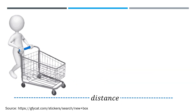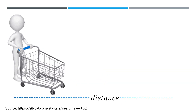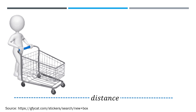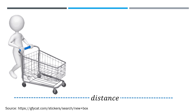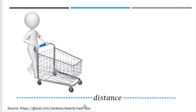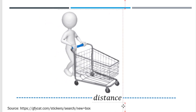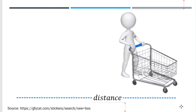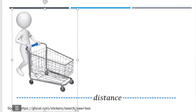So how do we illustrate that? You see this man holding a shopping cart. He is moving his position. As the man is moving, maybe he is trying to look for something, and the distance is covered.